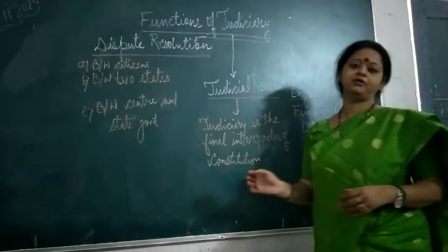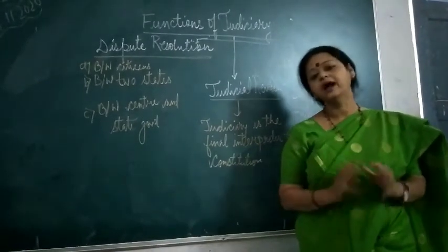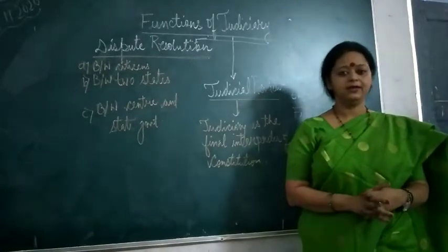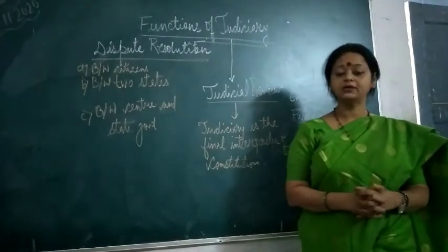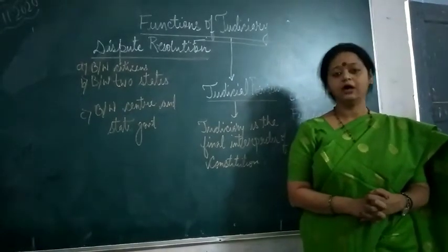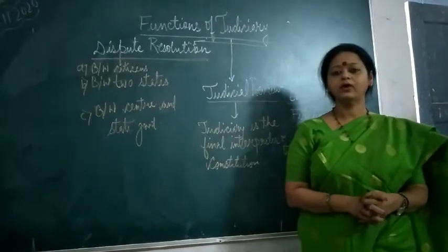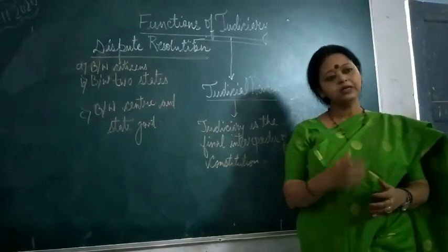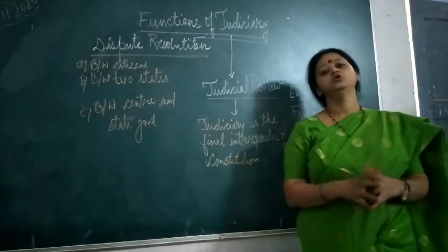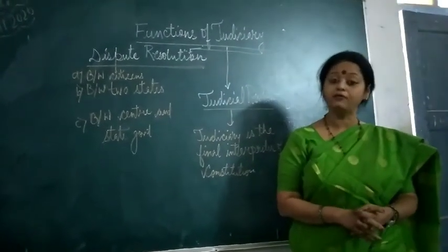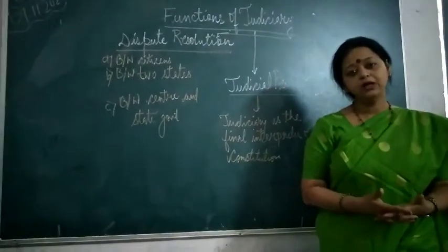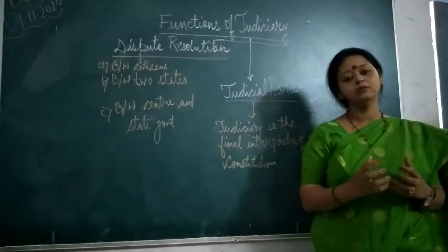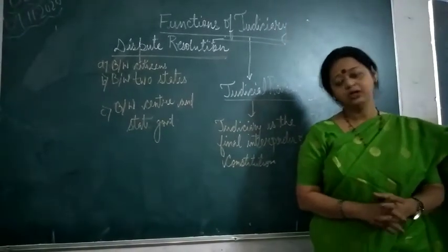Because Judiciary is the final interpreter of the Constitution. What is written in the Constitution and what does it mean in the Constitution, the final interpretation is by the Judiciary. So we can apply it in the judiciary, High Court or Supreme Court, and then High Court and Supreme Court will look at that law. And if it goes against the basic structure of our constitution, the preamble, then the law will be declared void. So this is a very powerful function, a very important function of our judiciary, that is judicial review.